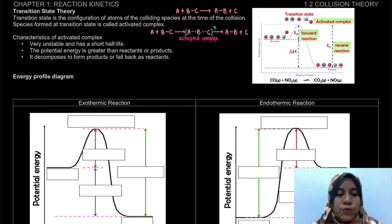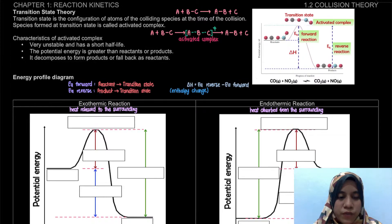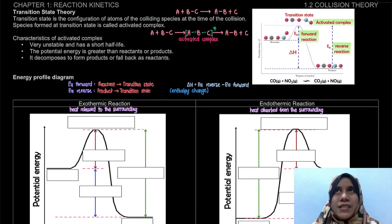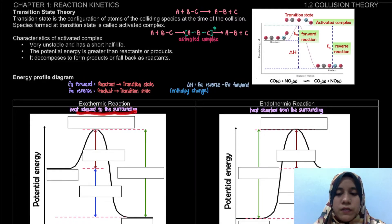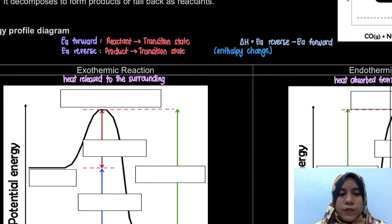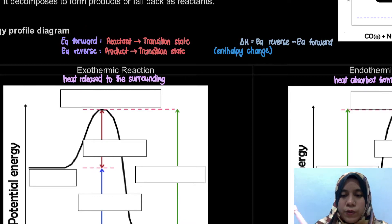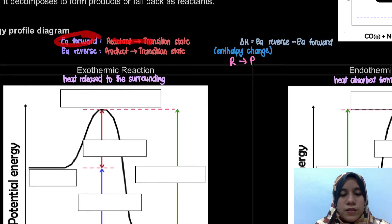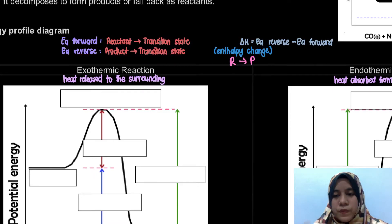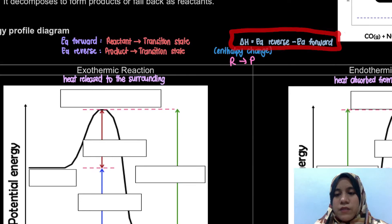Now let's look at how to draw the energy profile diagram. We'll examine exothermic and endothermic reactions. For exothermic reactions, heat is released to the surroundings, while for endothermic, heat is absorbed from the surroundings. Note: Ea forward is the activation energy from reactant to transition state. Ea reverse is from product to transition state. Delta H equals Ea reverse minus Ea forward — delta H being the enthalpy change.